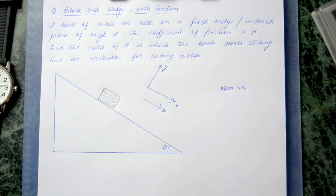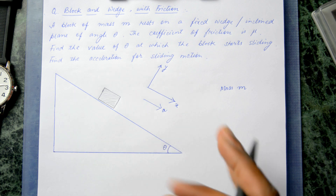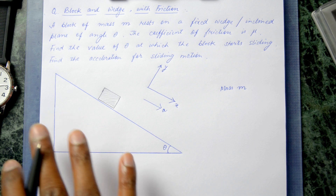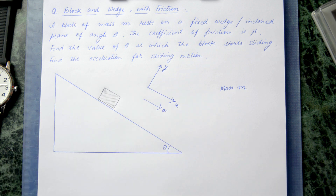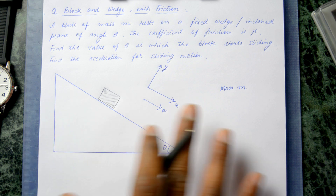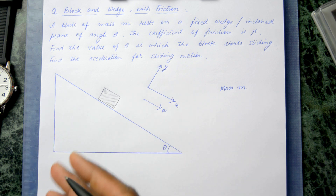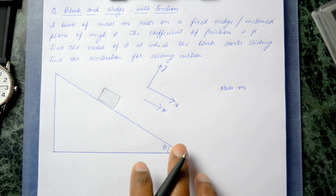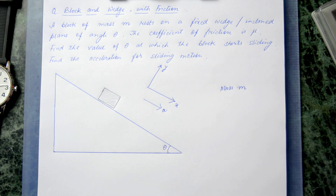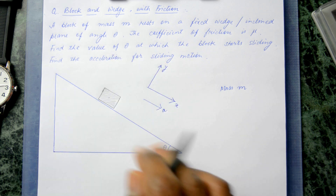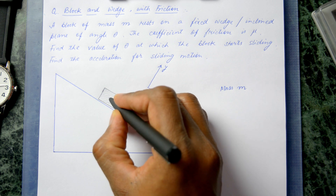A simple way to approach problems like this is the Newtonian approach, in which we look at the different kinds of forces involved. Once we figure out the forces, whenever there is an imbalance of forces there will be motion in that direction, and we can apply Newton's second law. Let's look at the different forces involved.